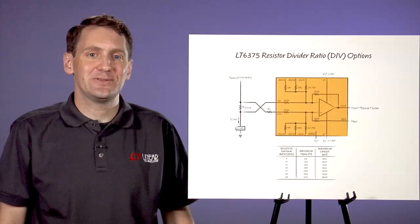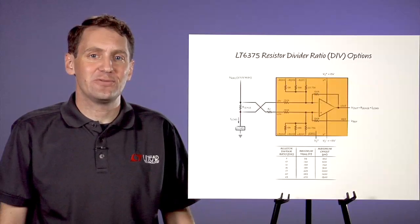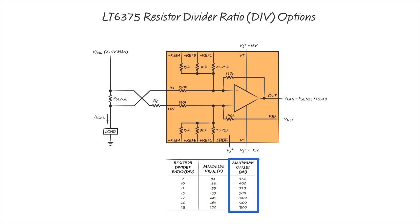With the LT-6375, you can make a trade-off between input voltage range and output noise and output offset. Tying more reference resistors to ground creates a higher resistor divider ratio, which allows for a higher input range but reduces accuracy of the amplifier. Using a lower resistor divider ratio lowers the input range but increases accuracy. Seven ratios between 7 and 25 are available. You should choose the lowest resistor divider ratio that meets your input range requirements.